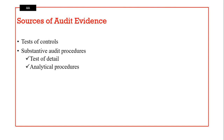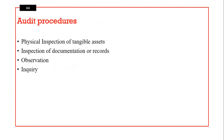Techniques to gather audit evidence include: physical inspection of tangible assets — for example, inspecting motor vehicles for existence; inspection of documentation or records — for example, title of property for rights and obligations; observations of internal controls in action; and inquiries of management where you need to get more collaborative evidence.